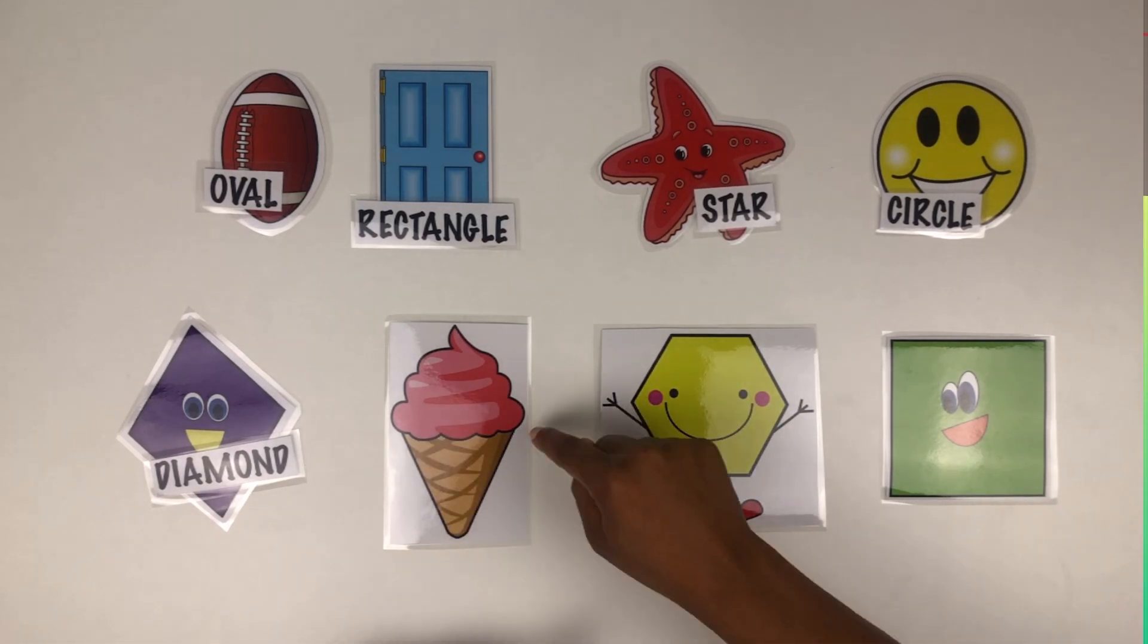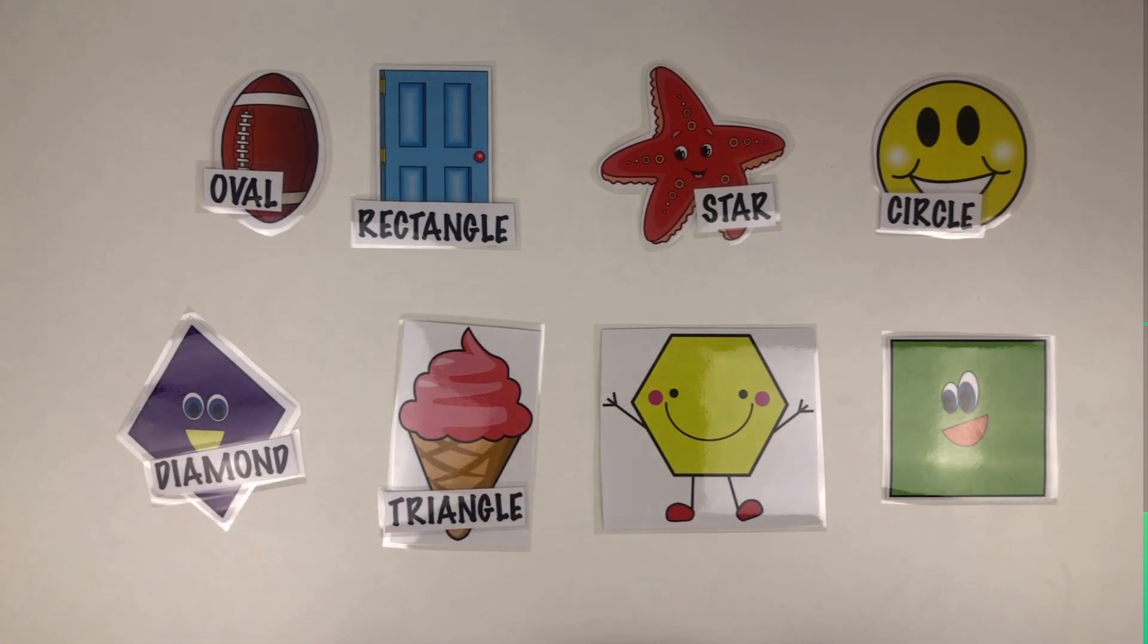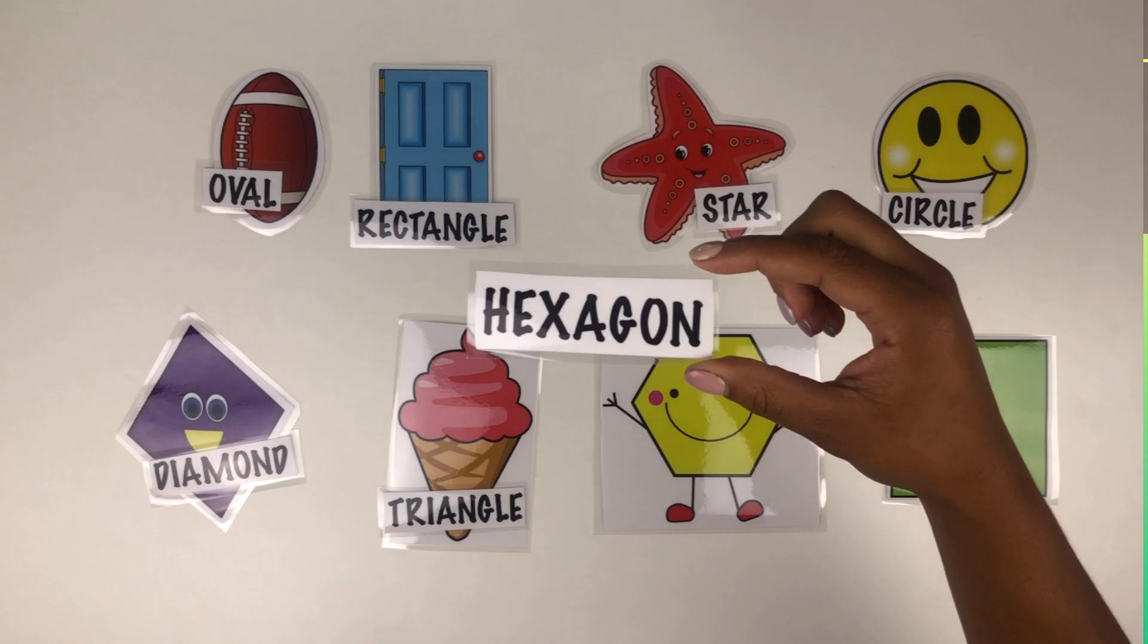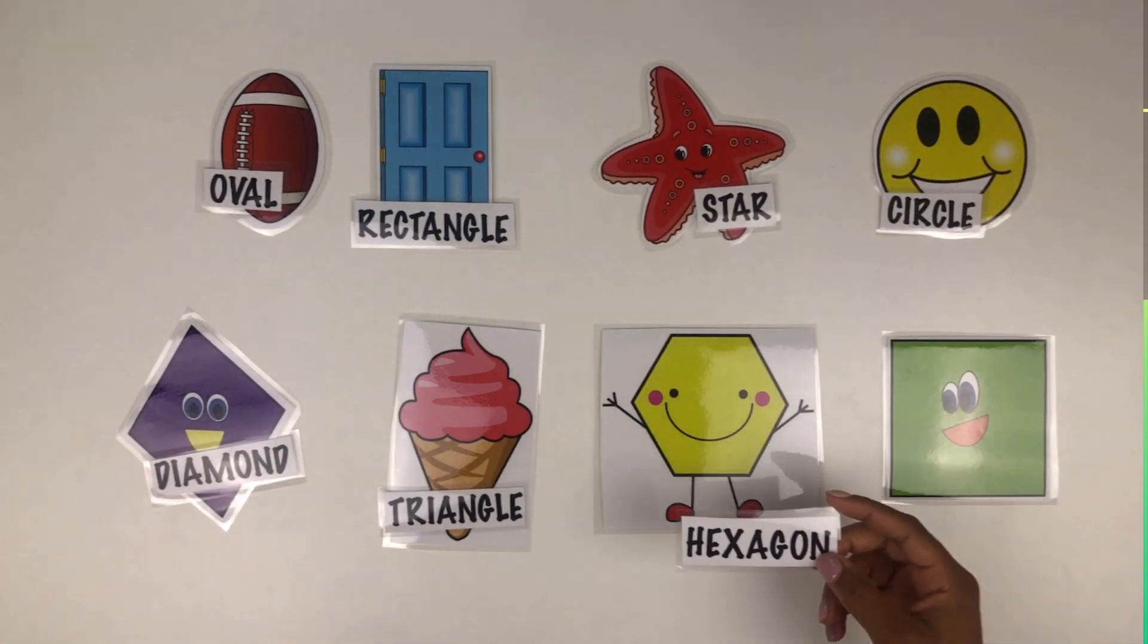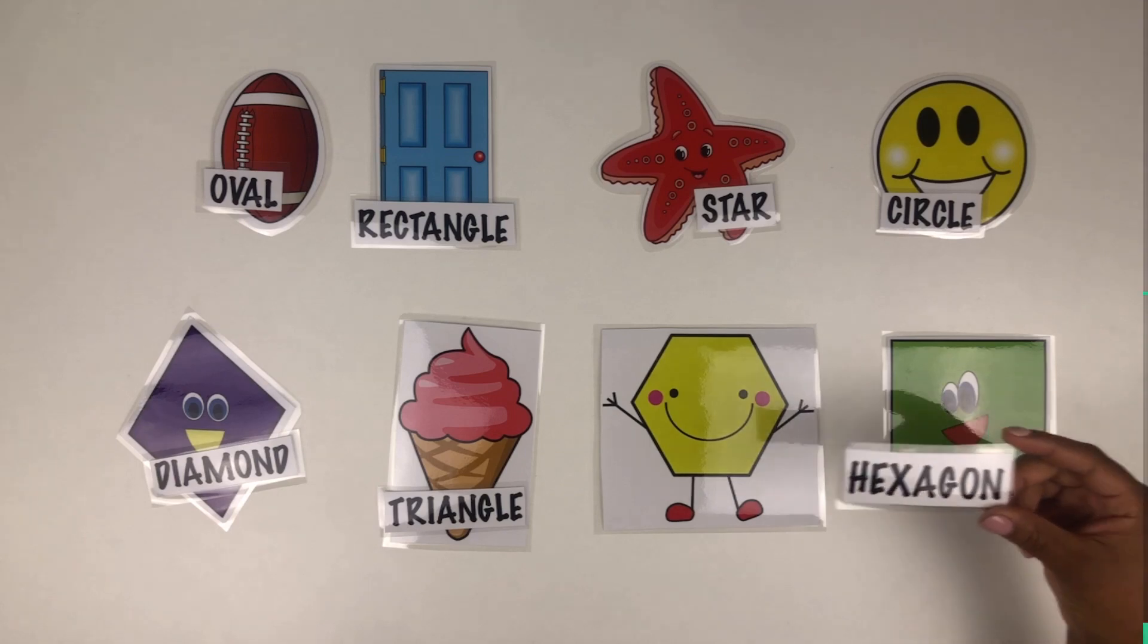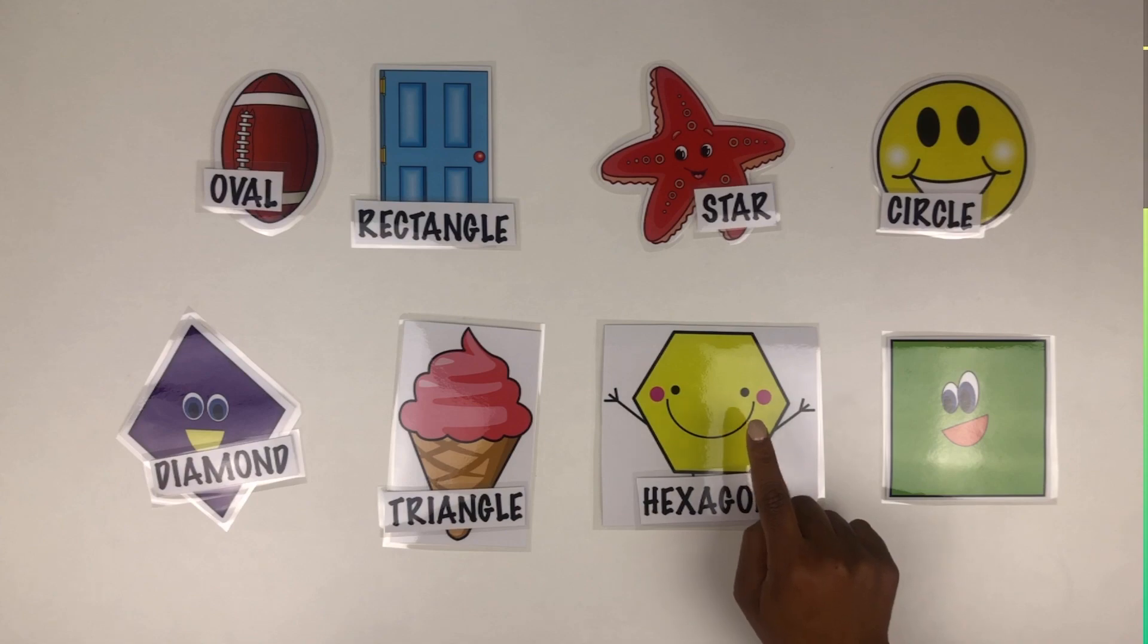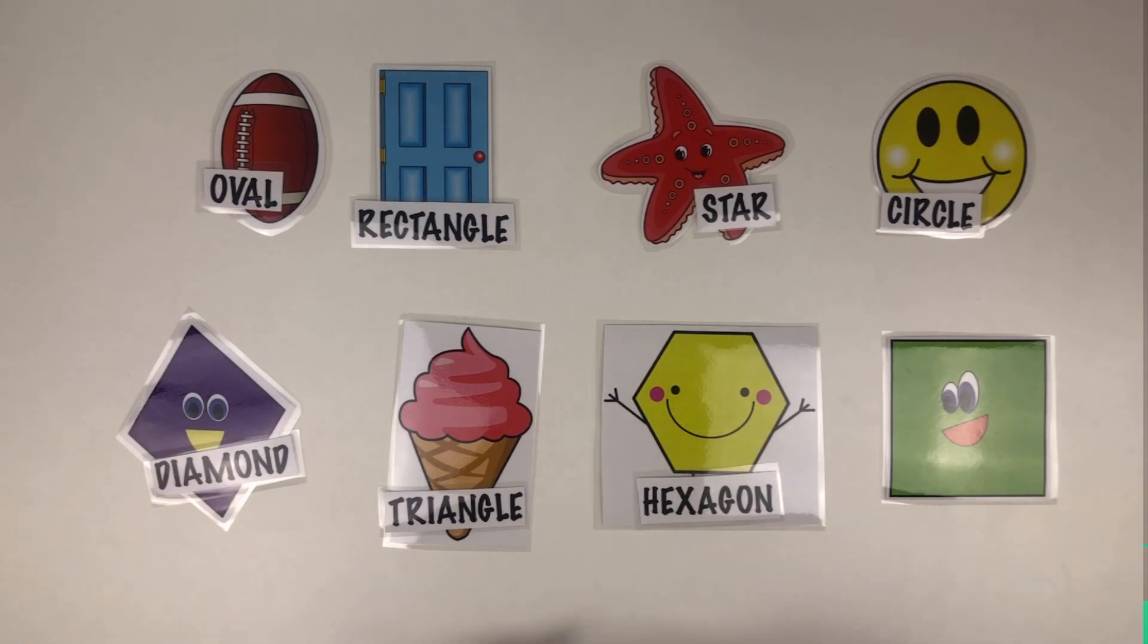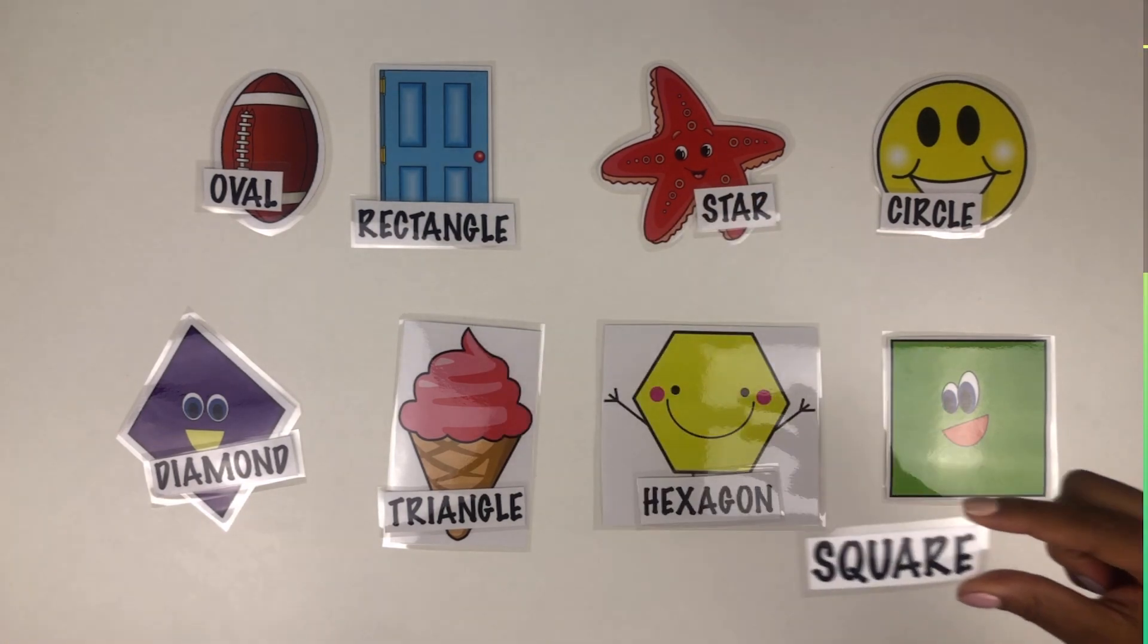How about a hexagon? A hexagon, which shape is a hexagon? Right here, this is our friend Mr. Hexagon. How about a square? Do you know what shape is a square?